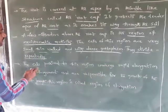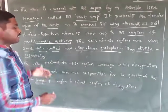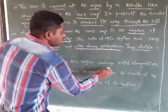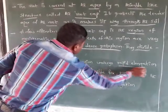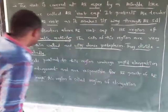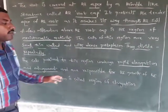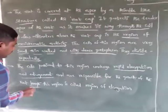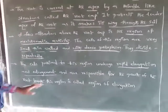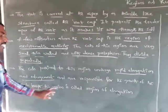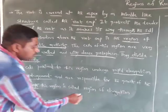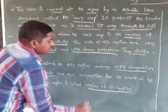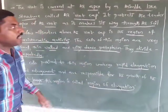The cells proximal to the meristematic region undergo rapid elongation and enlargement, and are responsible for the growth of the root length. So, this region is called the region of elongation.